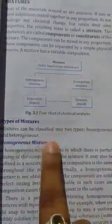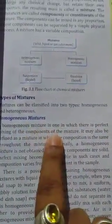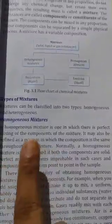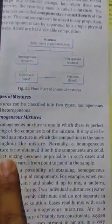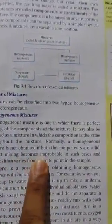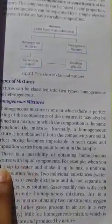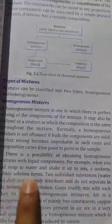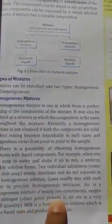There are two types of mixtures: heterogeneous and homogeneous mixtures. A homogeneous mixture is one in which there is a perfect mixing of the components. For example, in a sugar solution, sugar is perfectly dissolved in water — this is a homogeneous mixture. Similarly, soap water and milk are examples of homogeneous mixtures.